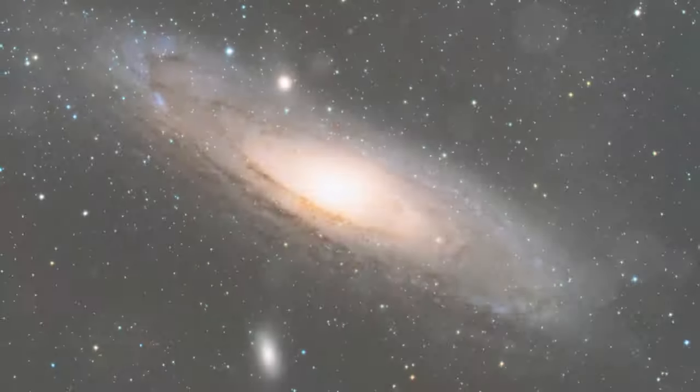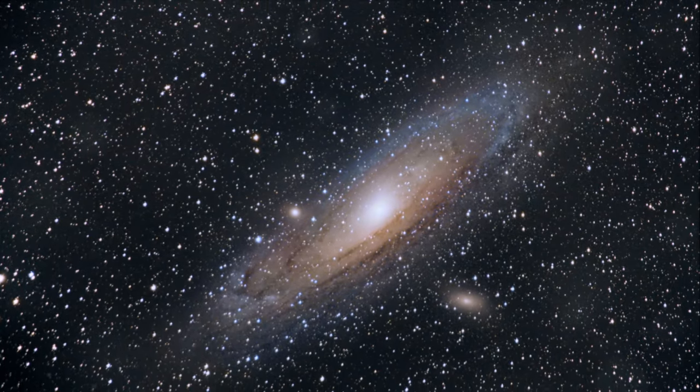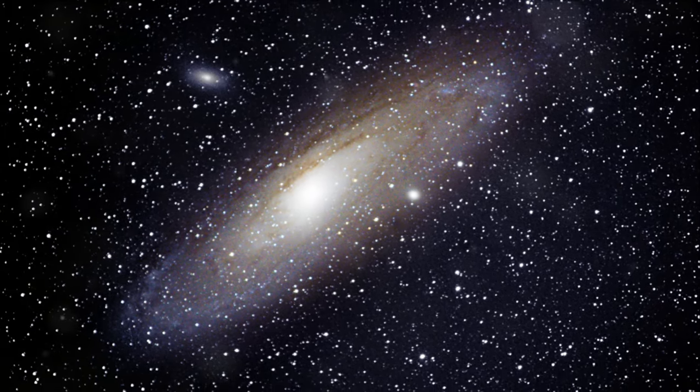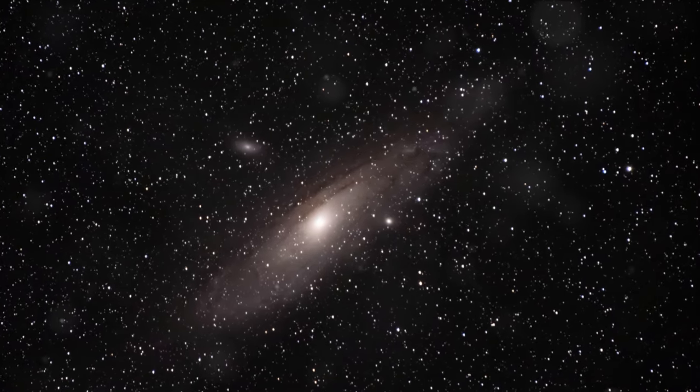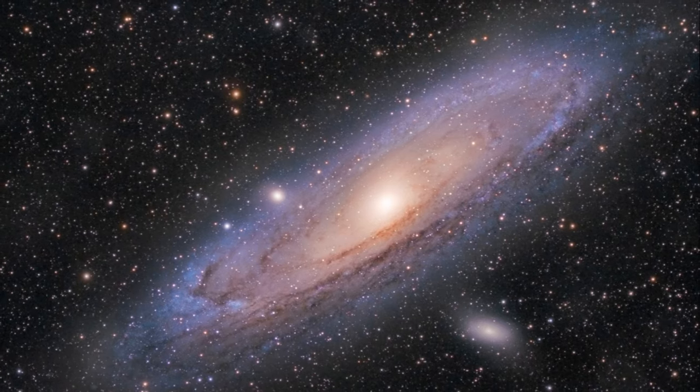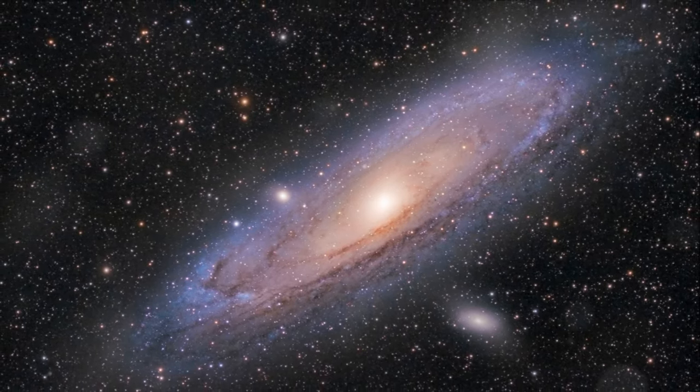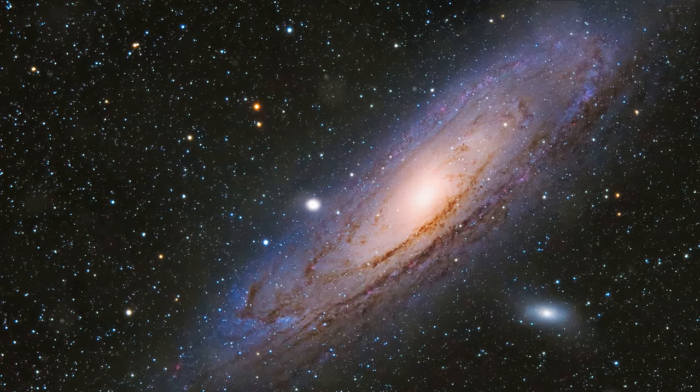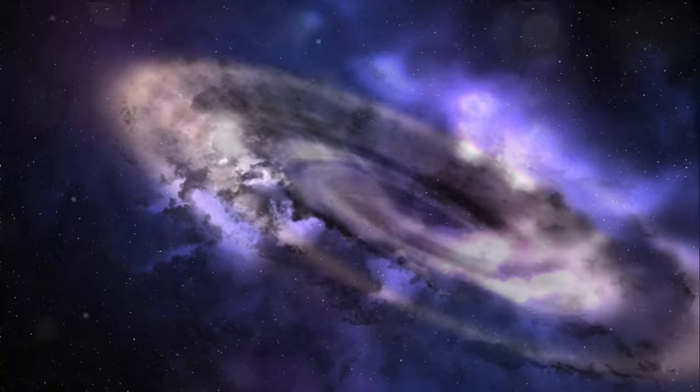Our closest galactic neighbor is on a collision course with us. Meet the Andromeda Galaxy. Situated approximately 2.537 million light-years away, the Andromeda Galaxy is our nearest galactic neighbor. Despite this seemingly vast distance, in the grand scheme of the universe, Andromeda is just a stone's throw away. This spiral galaxy, with its 220,000 light-years in diameter, is the most significant member of the local group, a galaxy cluster that also includes the Milky Way, the Triangulum Galaxy, and about 54 other smaller galaxies.